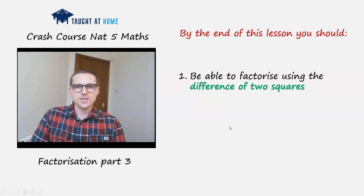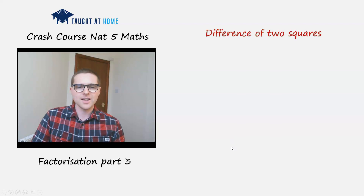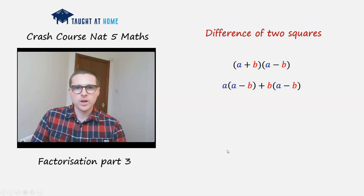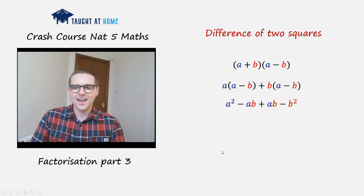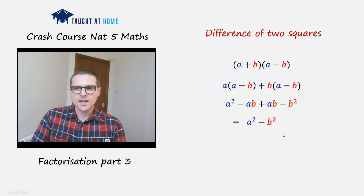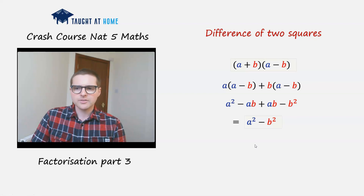Let's try factorising with a difference of two squares. What do I mean by a difference of two squares exactly? Say we have (a + b) times (a - b). We expand the brackets and we get a squared minus b squared, because the minus ab and plus ab cancel out. So when we have something like this, we can factorise it to be something like this.